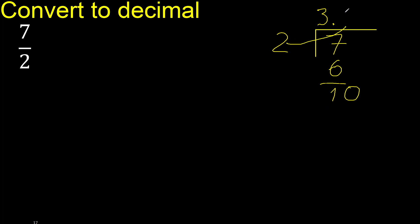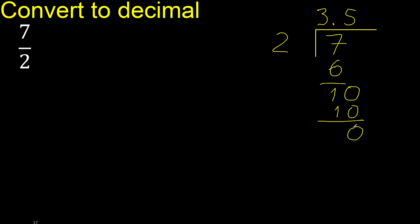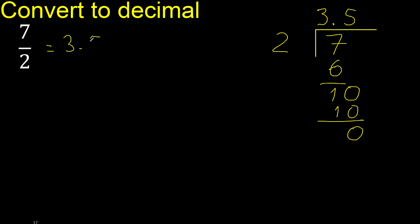2 multiplied by 5 is 10. 10 is not greater. Subtract: 10 minus 10 is 0, therefore finish here. Finish. Thank you.